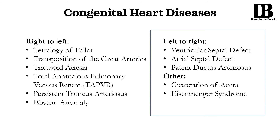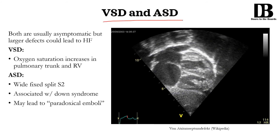Now let's discuss some left to right shunts, as well as some other diseases like coarctation of the aorta and Eisenmenger syndrome. We've talked a lot about VSDs and ASDs when speaking about the embryology. What's mainly important to know is that they could be asymptomatic — and they usually are asymptomatic — but larger defects could lead to heart failure, because you keep sending more and more blood back into the right side of the heart.